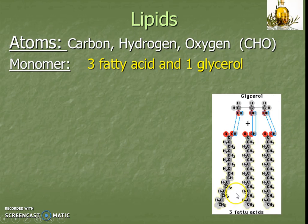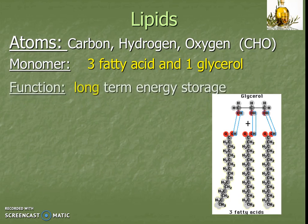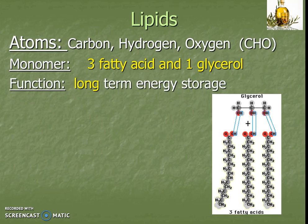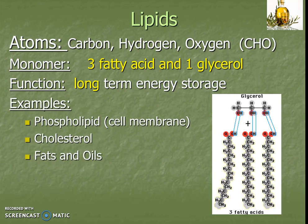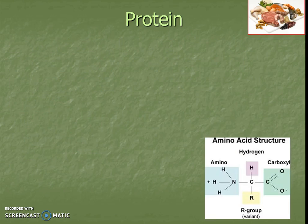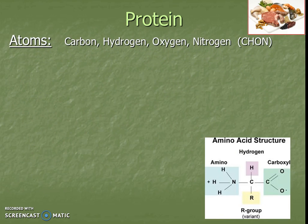A pure lipid has three fatty acids and one glycerol. We know that compared to carbohydrates, their job is long-term energy storage rather than short-term. They also function as insulation. Lots of different examples include phospholipids, cholesterol, and fats and oils.